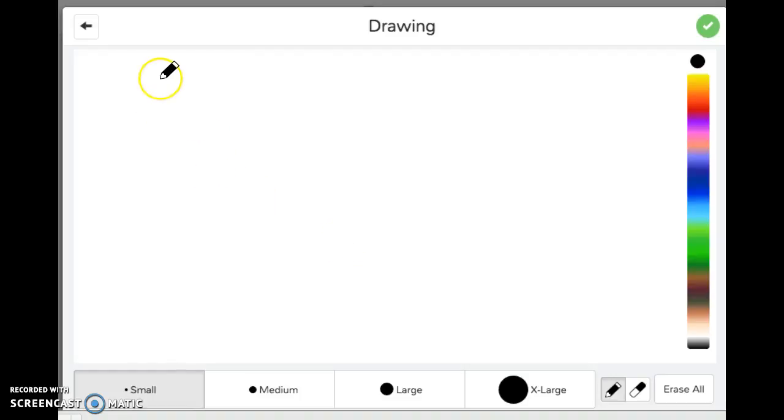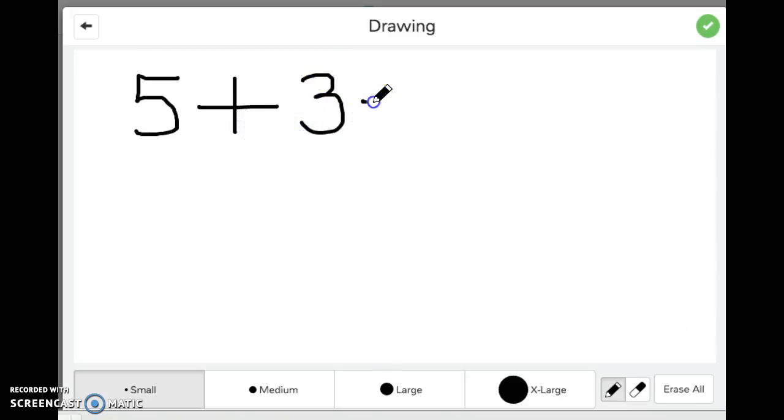Right, so what I'm going to do today is show you how to make 10 with numbers when you're adding numbers. Say for example you are doing 5 plus 3 plus 5.